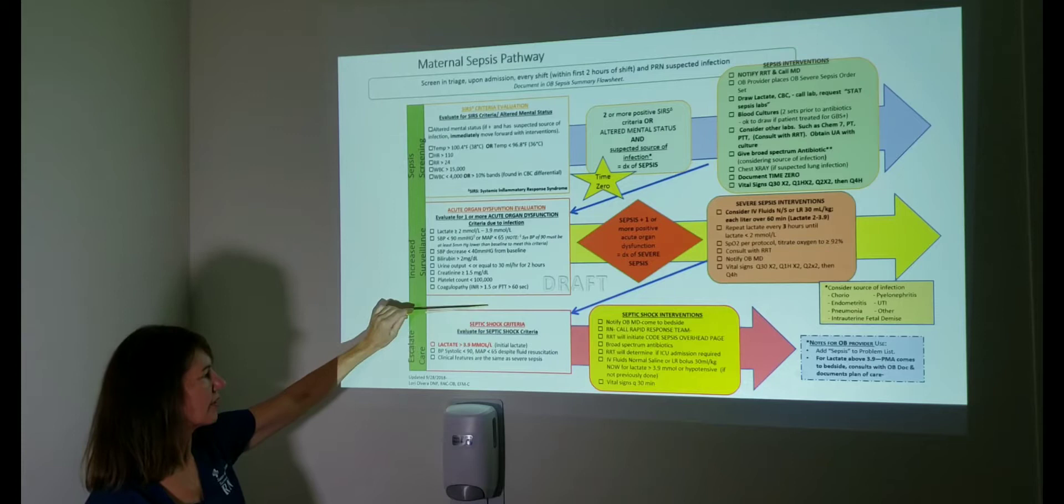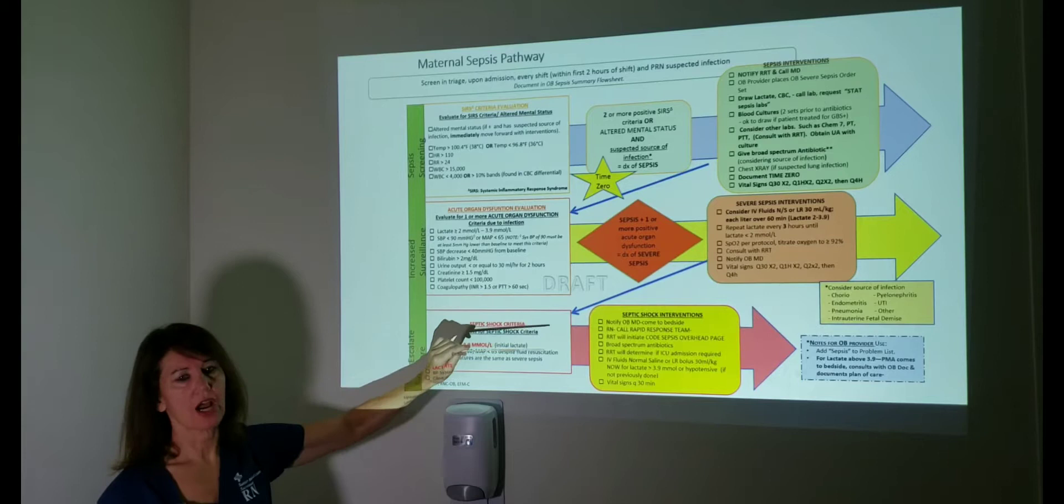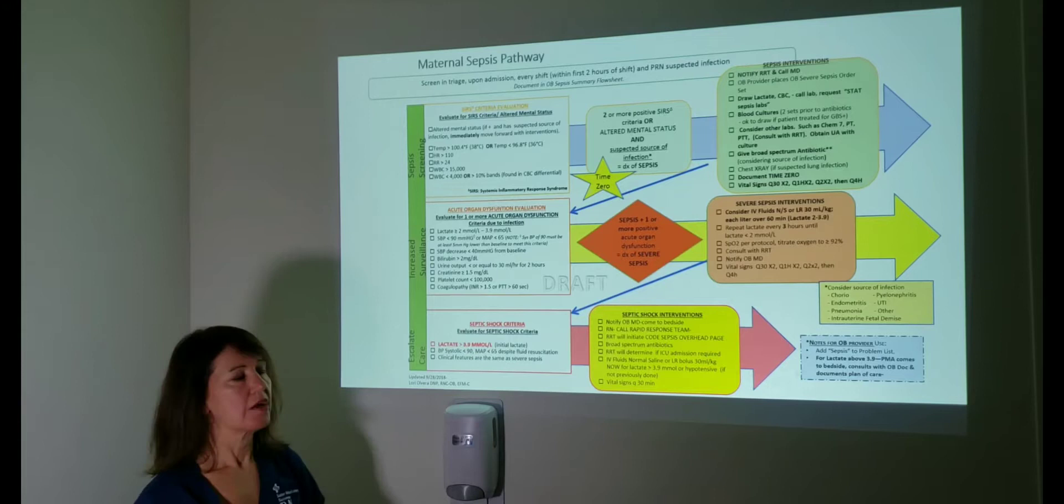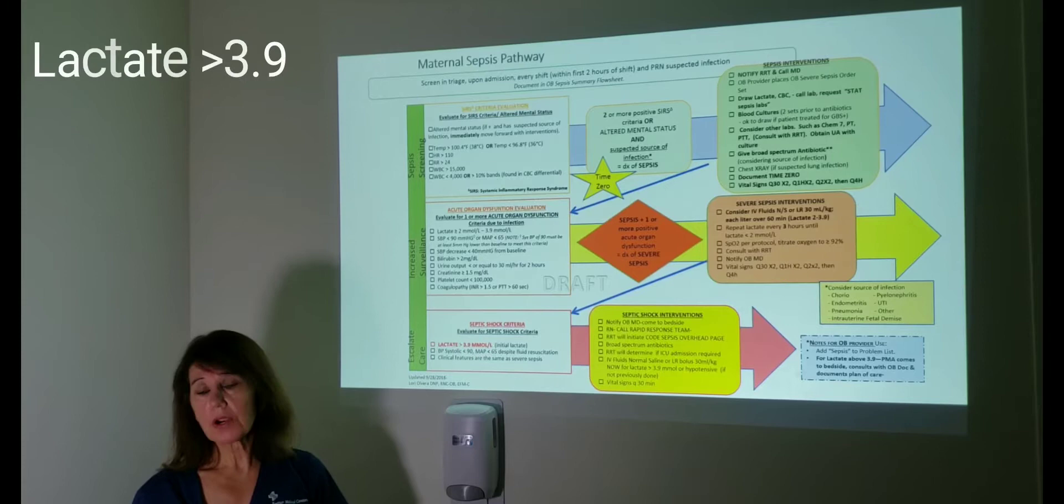So the last thing that we're considering on that pathway is septic shock criteria. We always want to keep—I mean, they can come in at any point in septic shock—but our septic shock criteria is you have a lactate greater than 3.9 or you're getting hypotension despite giving that 30 mLs per kg fluid bolus.